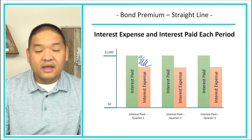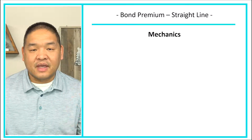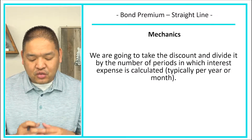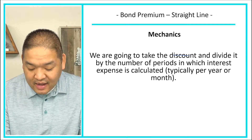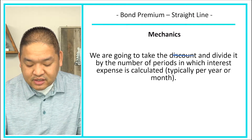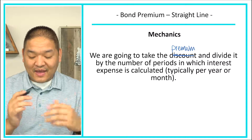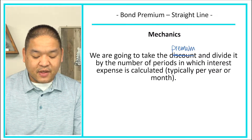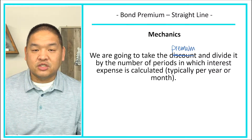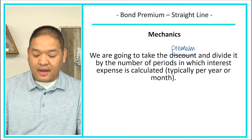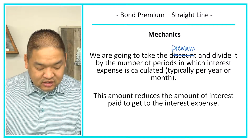Understanding the high-level mechanics of what we're going to be doing: we are going to take the premium and divide it by the number of periods in which the interest expense is calculated — typically on a per month or per year basis. We need to read the problem to understand how we allocate on the straight line basis. The amount reduces the interest paid to get to the interest expense.